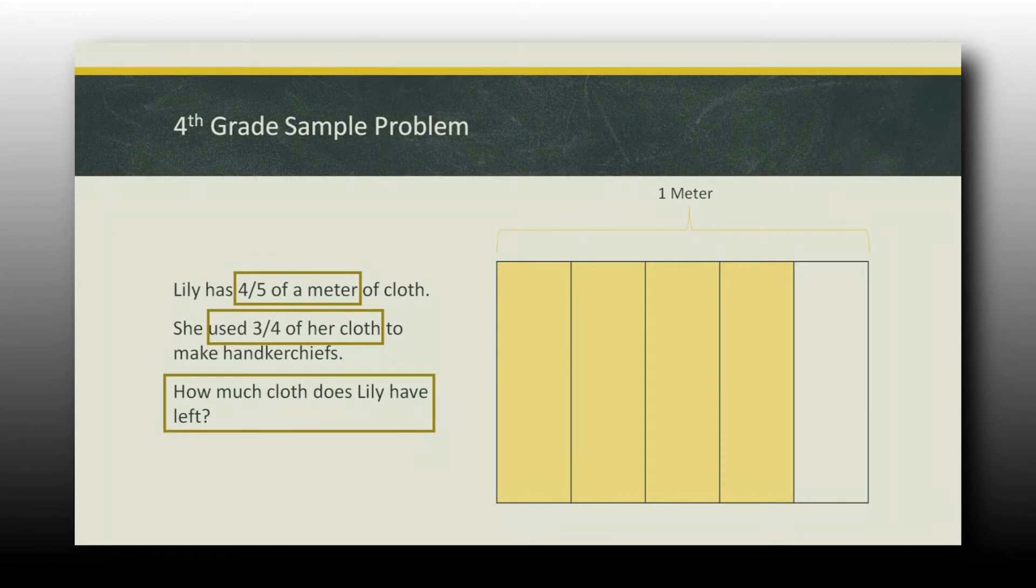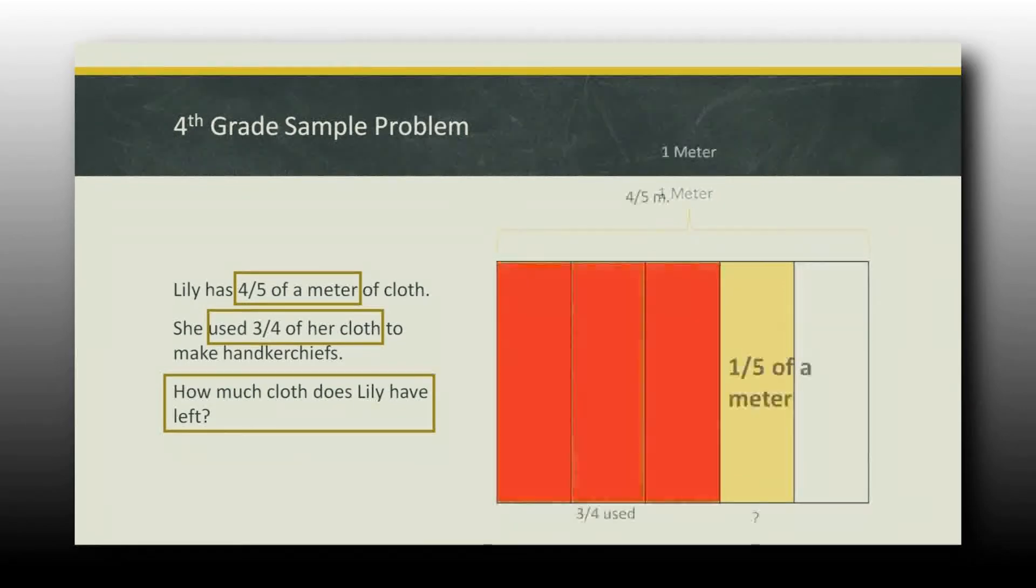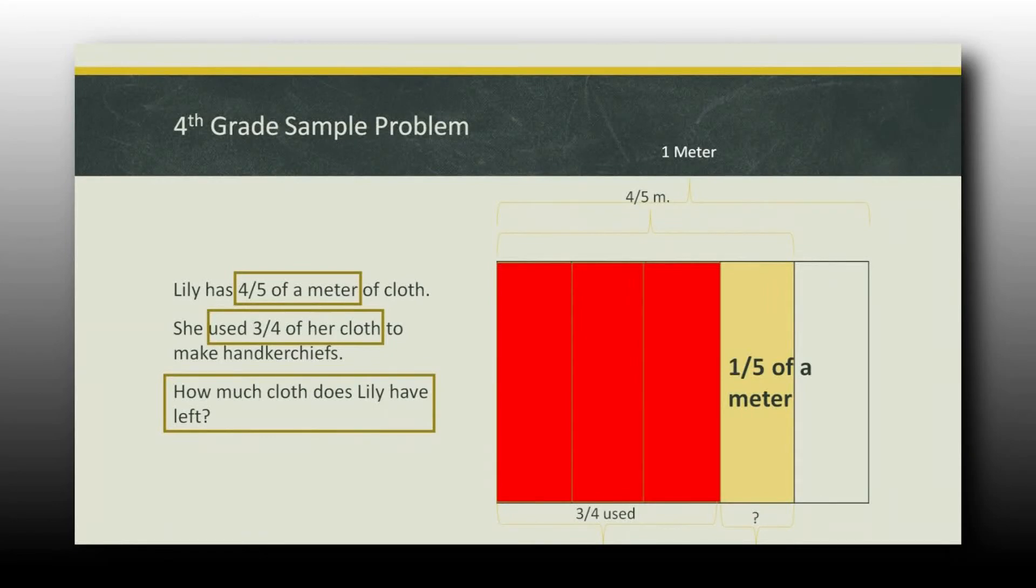Now we know that she used three quarters of her cloth. So how are we going to show that she used three quarters of her cloth? We're just going to take three quarters of it away. So we're just going to show, so that right there is three quarters of her cloth that she used. Now my big question is, how much does she have left? Can anybody see real quickly how much is left? The yellow is the portion that's left. If I know that that whole thing is a meter, well then fairly quickly I can figure out, and kids can figure out, that that's going to be one fifth of a meter of cloth left.